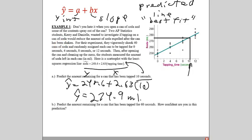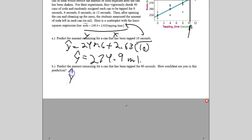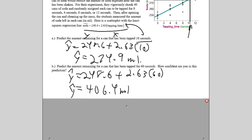Then it says, predict the amount of remaining per can that's been tapped for 60 seconds. Same thing. Y hat equals 248.6 plus 2.63, and now we plug in 60 for time. Type in our calculator, 60 times 2.63 plus 248.6. And what you'll get is 406.4 milliliters. Now, there's a couple problems with that. For one thing, there's probably not even 406 milliliters in a can of soda.